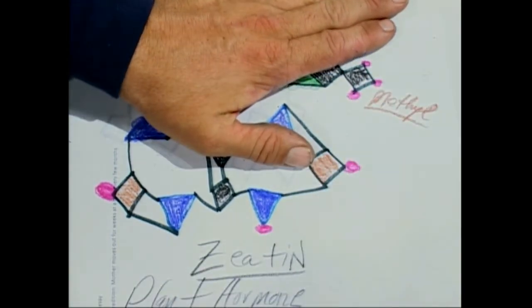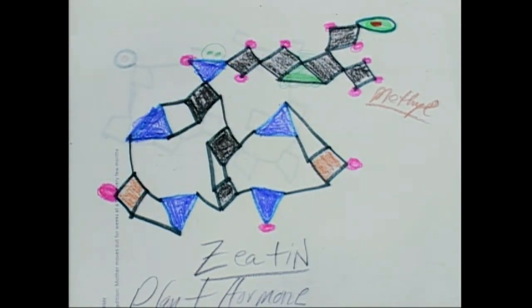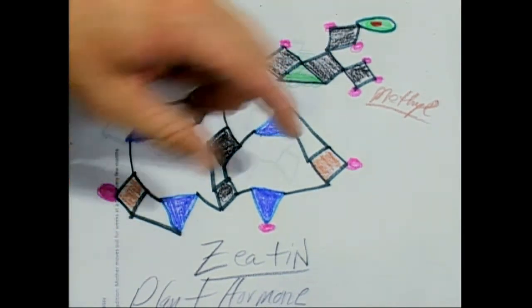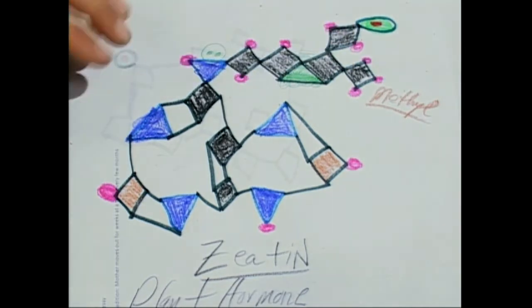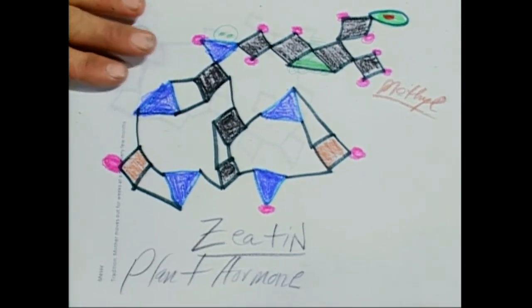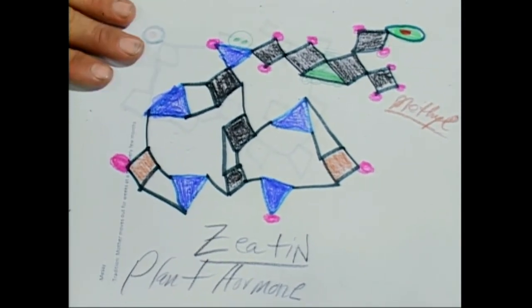Know your methyl groups. Remember the only difference on the epinephrine and norepinephrine was it was methylated on the nitrogen. So Zeatin here, this is one of the main plant hormones.